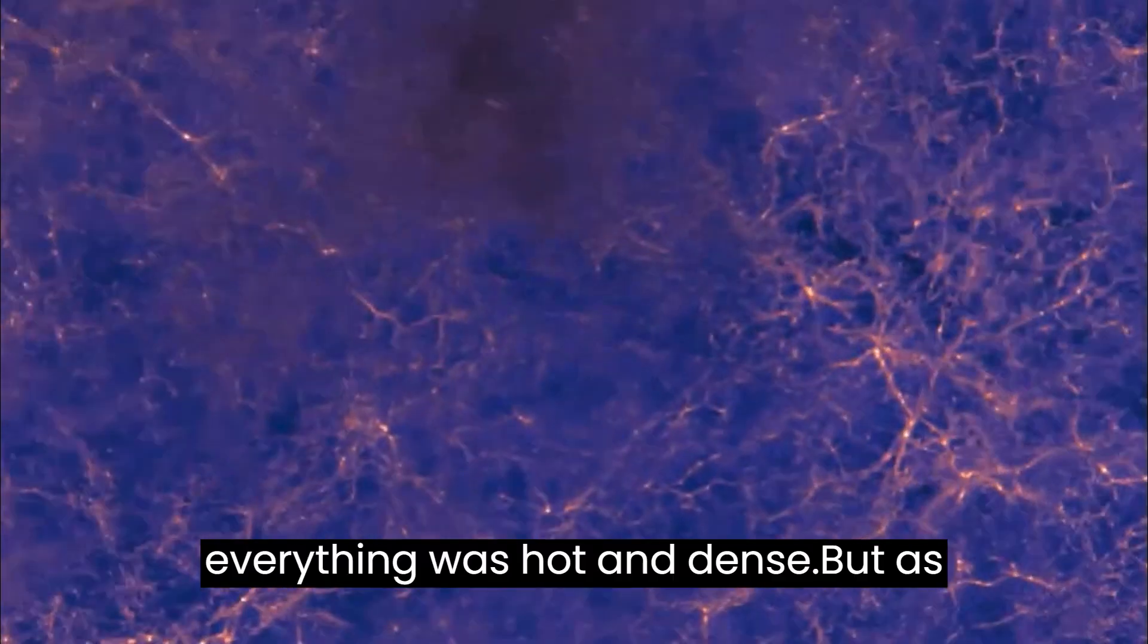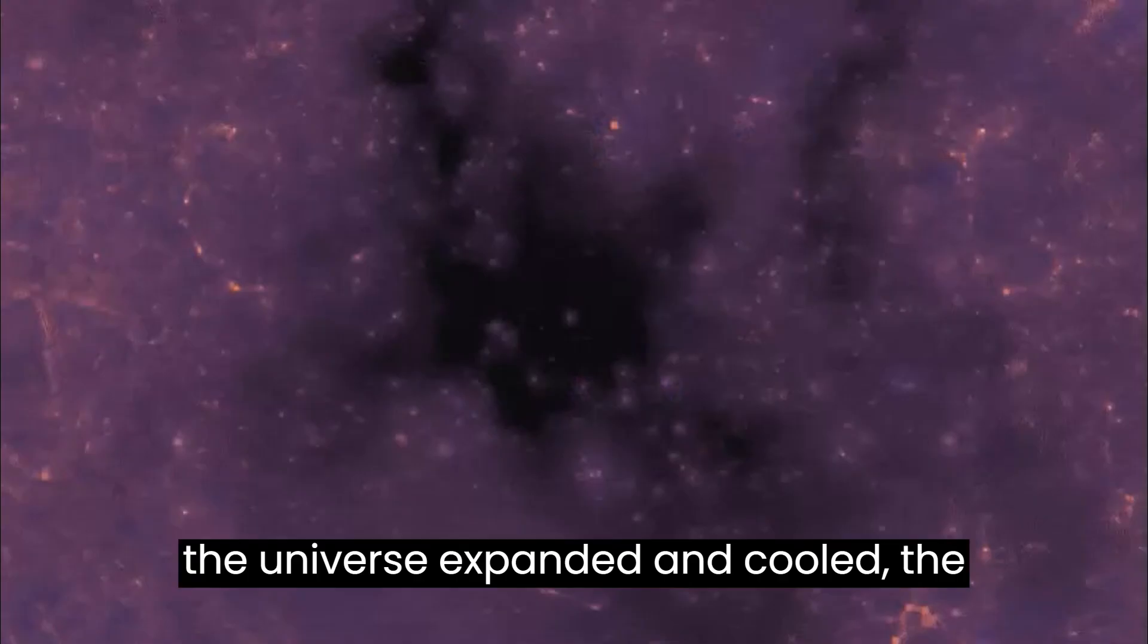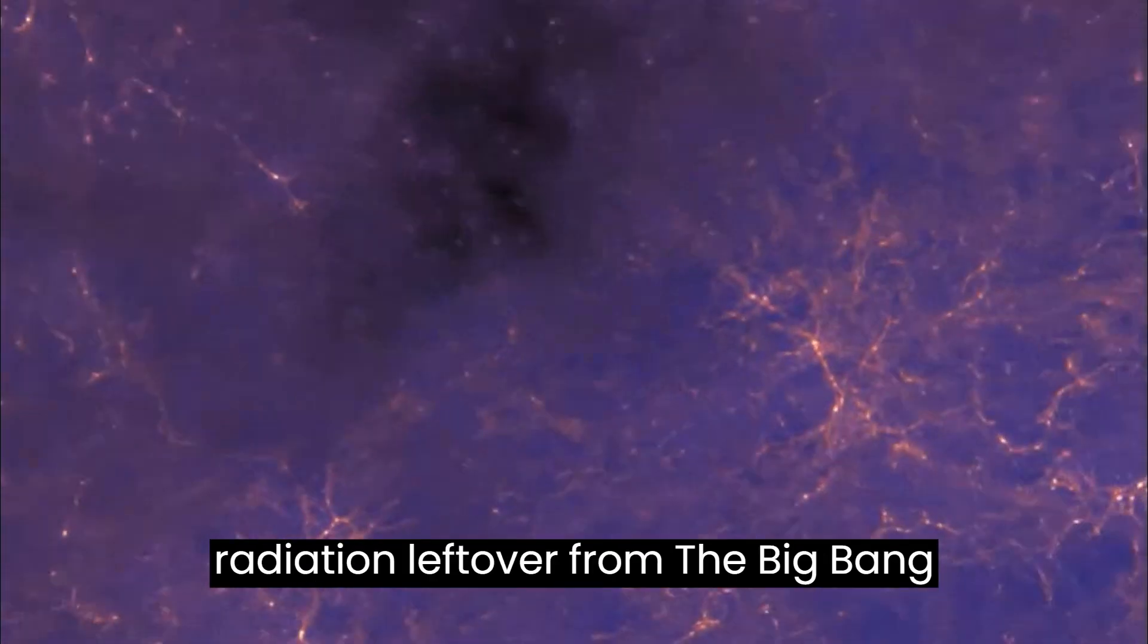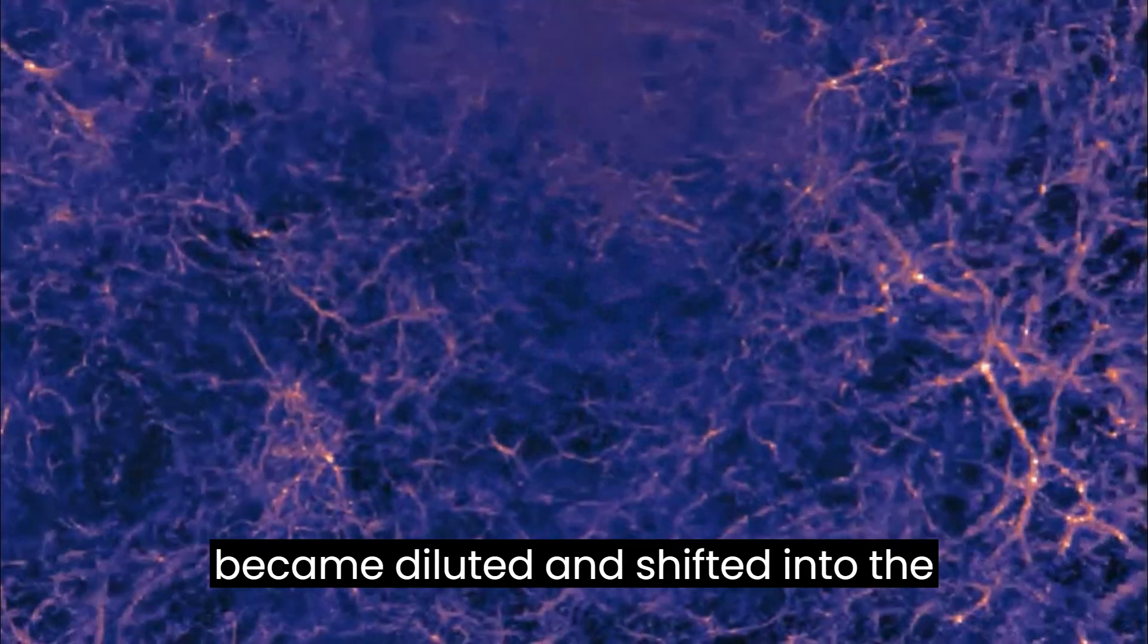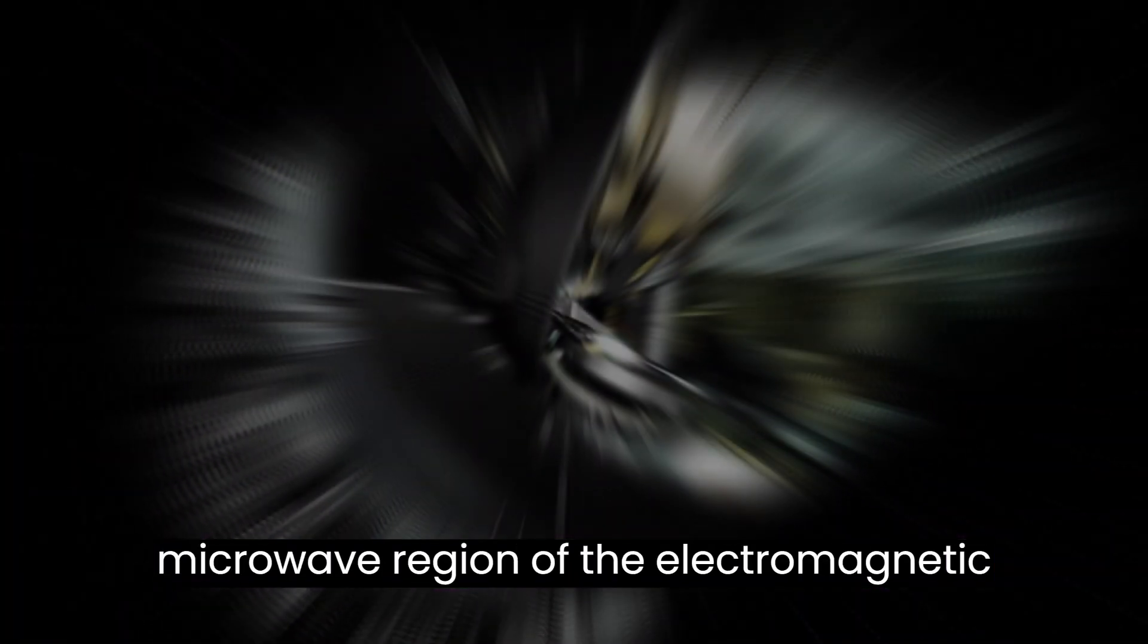At the beginning of the universe, everything was hot and dense. But as the universe expanded and cooled, the radiation left over from the Big Bang became diluted and shifted into the microwave region of the electromagnetic spectrum.